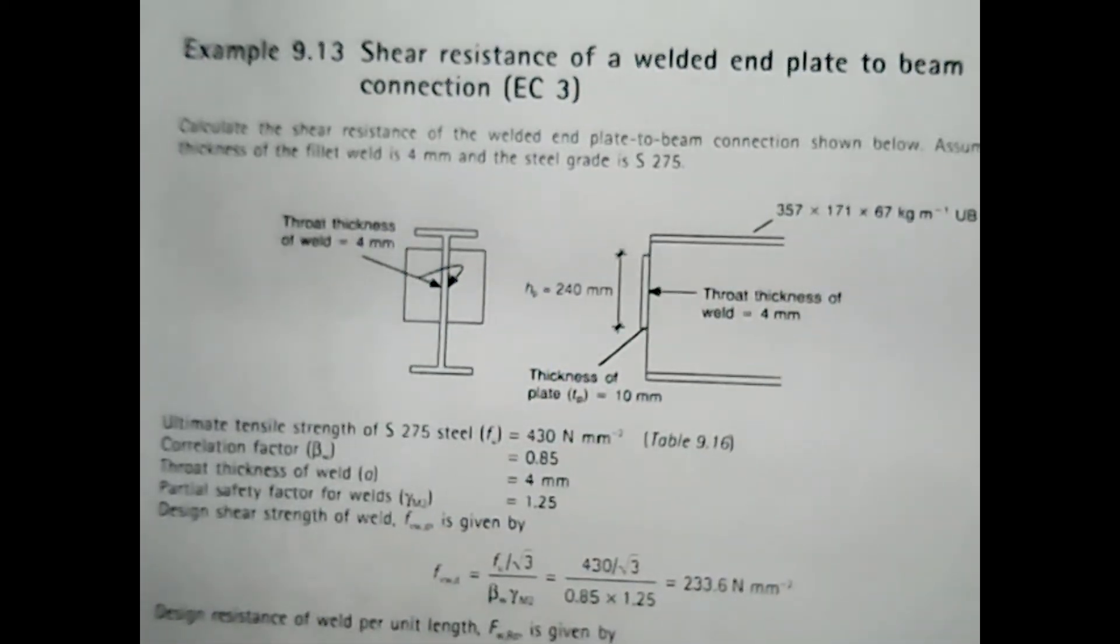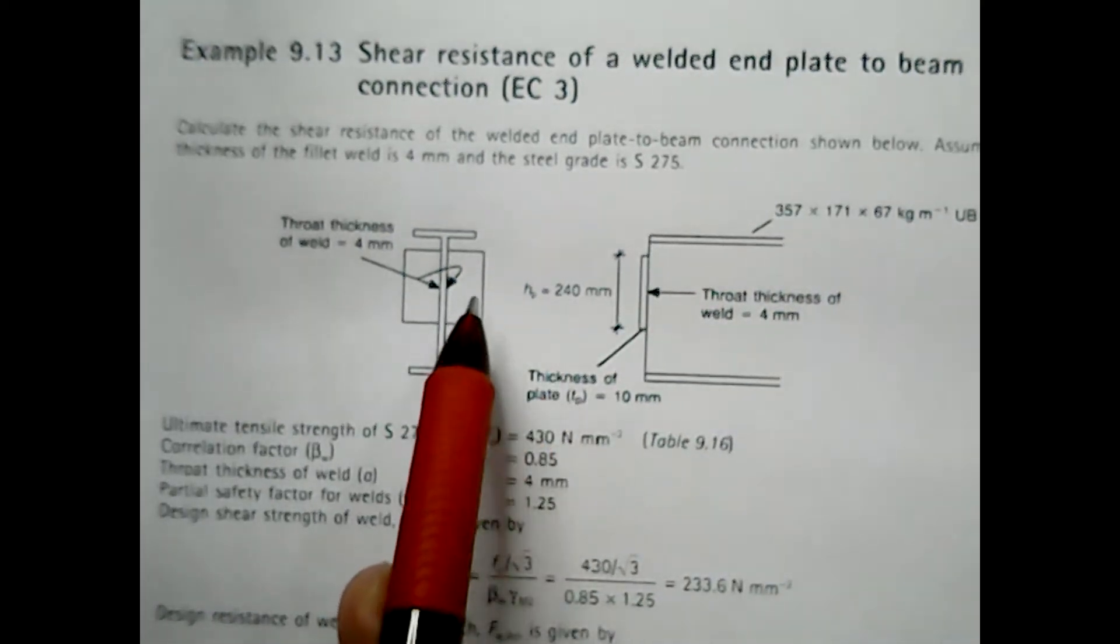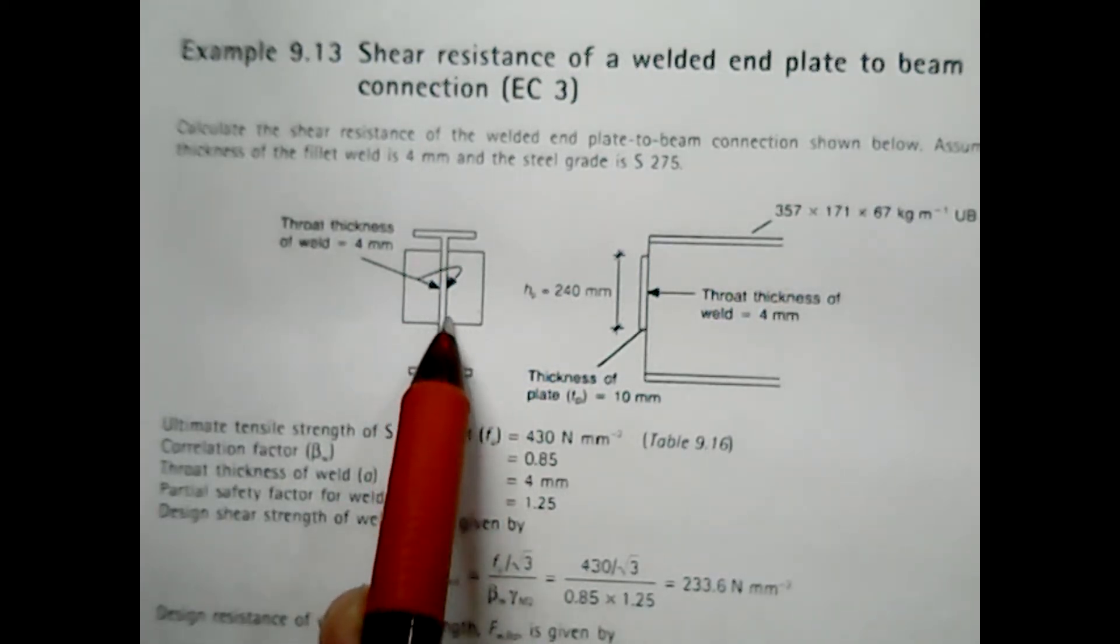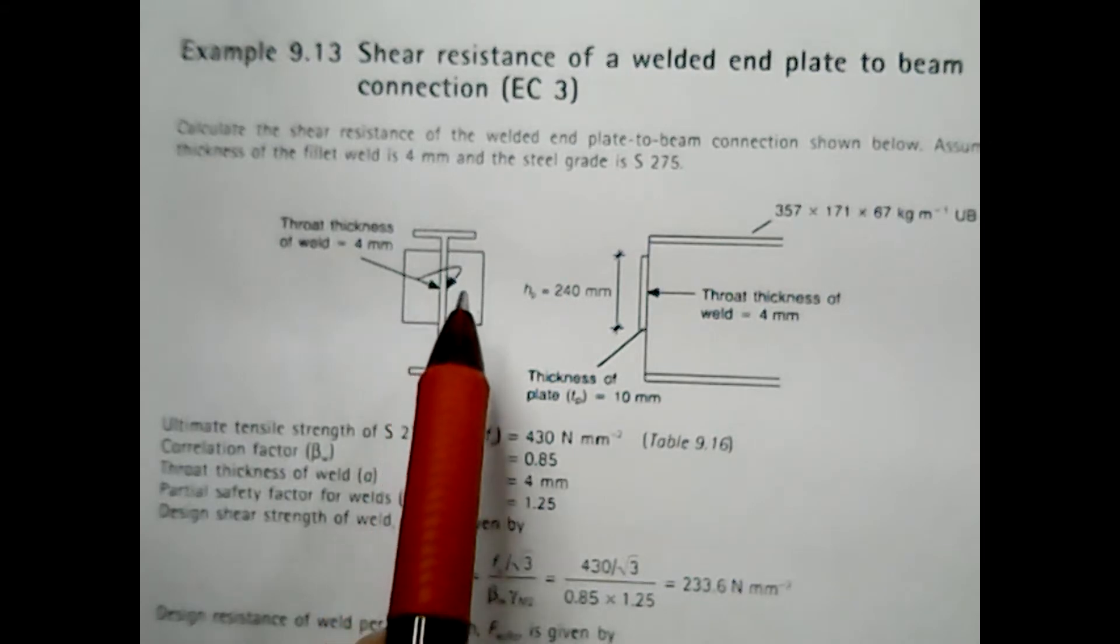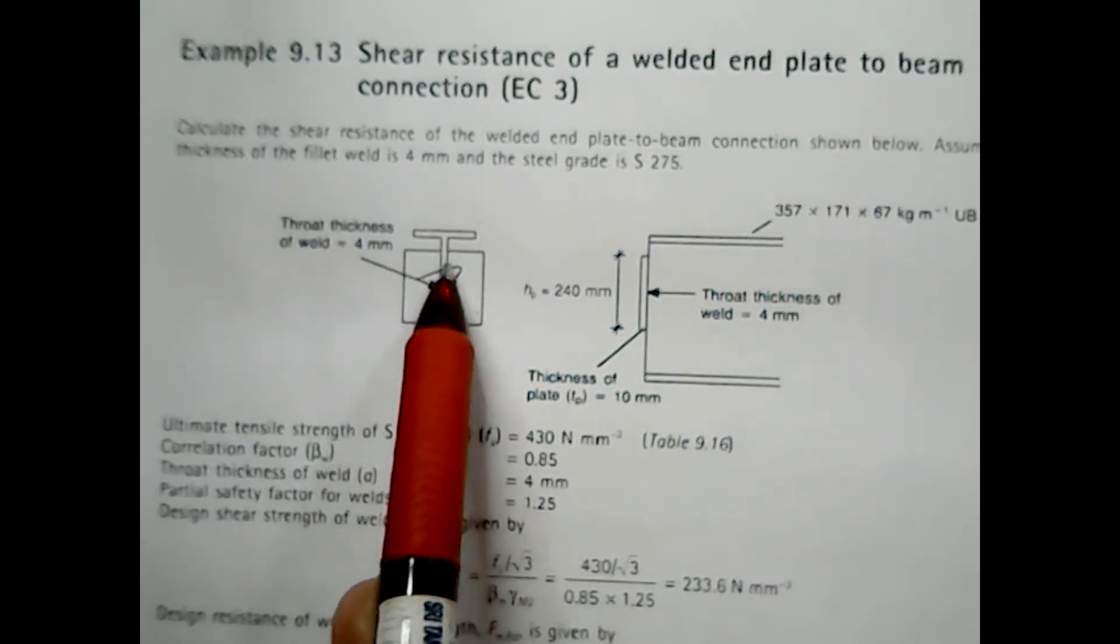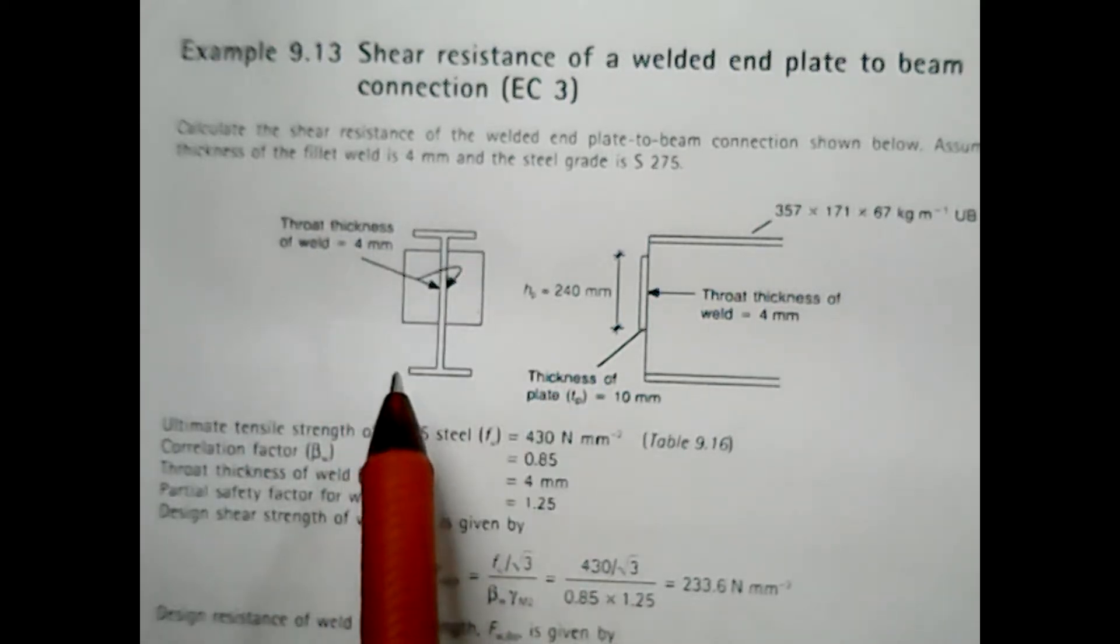In this example you've been given the plate which is welded at both sides to the beam. In this case we want to know what is the maximum shear that can be resisted by this particular connection.